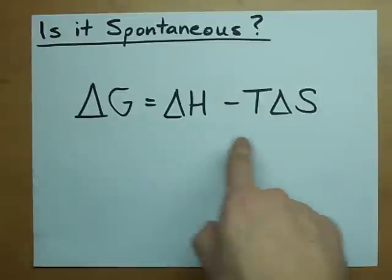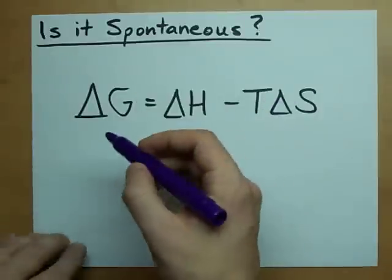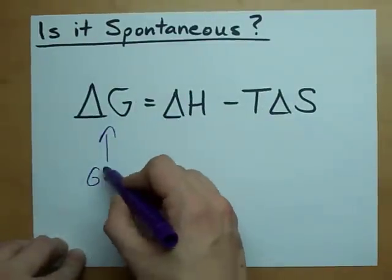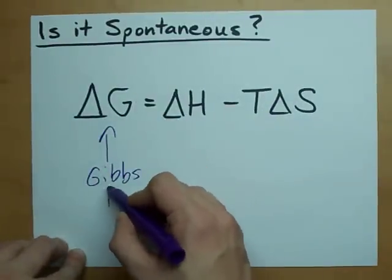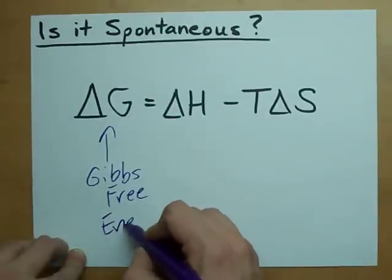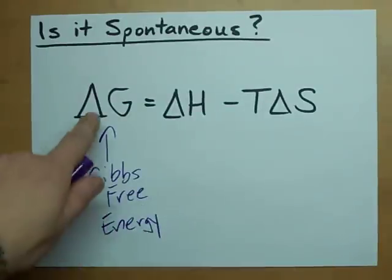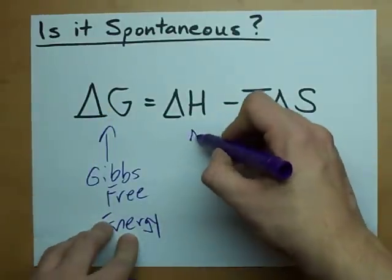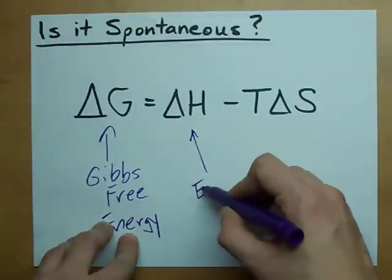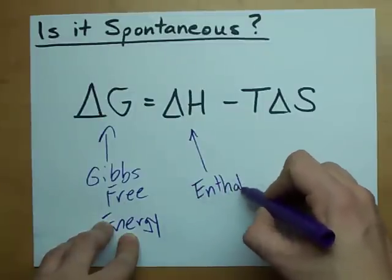Well, the answer lies in this equation. This is the equation to calculate the Gibbs free energy of a reaction. Delta G is the key. All you need is the enthalpy change of the reaction, or delta H.